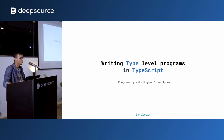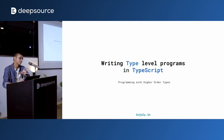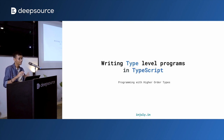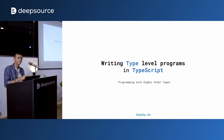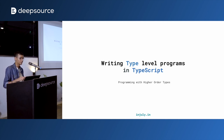A type-level program is a program that only has type declaration statements in it. And when you compile it, you have this one restriction: the generated JavaScript file should be empty. So you cannot use any statements that can get transpiled to runtime JavaScript, which means you can use the interface keyword, the type keyword, namespaces, but everything else is banned.